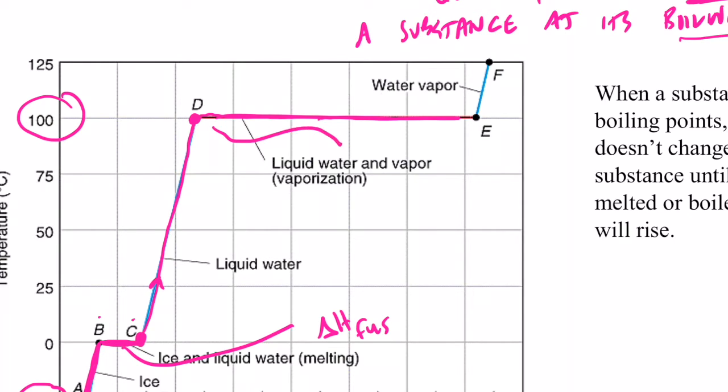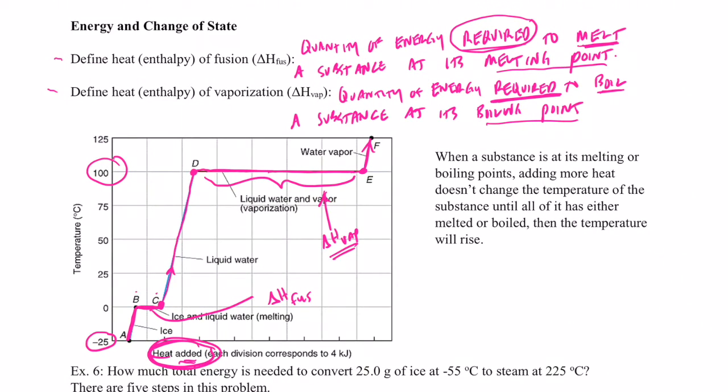So this energy right here between points D and E is called my heat of vaporization. So the energy I have to add to cause all of that water to boil at its boiling point is called the heat of vaporization. Now what's happened when I got to point E? The temperature starts to go up again. And that's because the phase change is complete. So to go through a phase change, energy is required. So when the substance is at its melting or boiling points, adding more heat doesn't change the temperature of the substance until all of it is either melted or boiled. Then the temperature will rise.